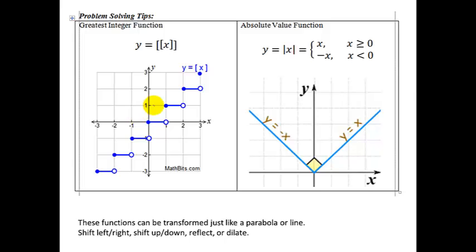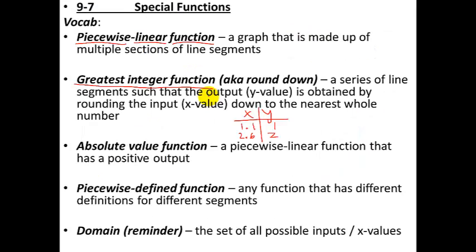Here's what the graph looks like — don't copy this down yet, we'll get to this slide soon. If you input anything between 0 and 1, you round down and get 0. As soon as you put in a 1, it stays as 1. Anything from 1 to 2 rounds down to 1, anything from 2 to 3 rounds down to 2, and so on. This is called the step function because it steps like a staircase.